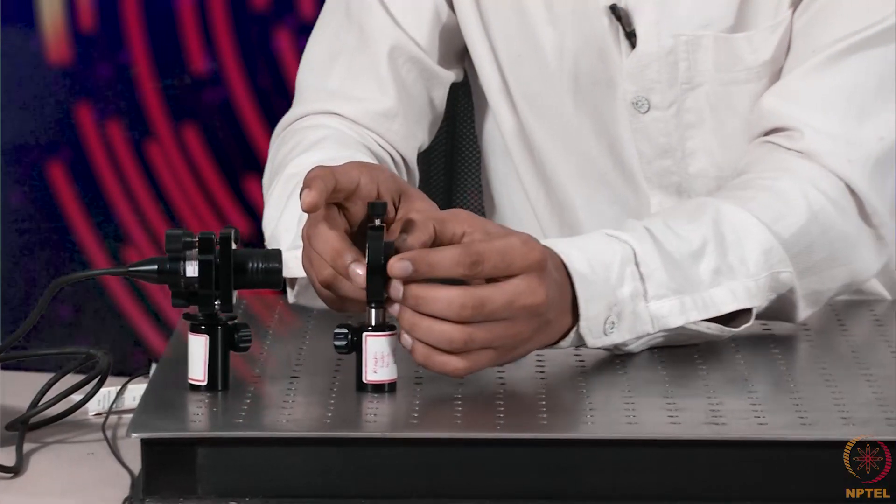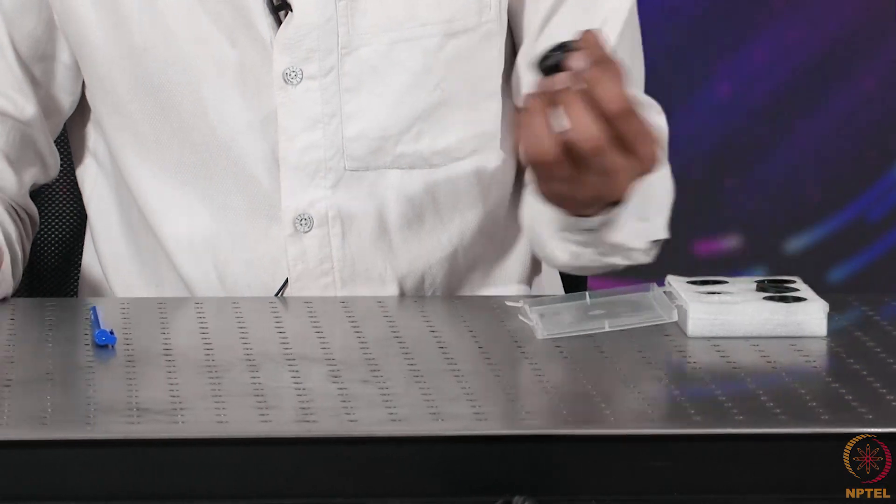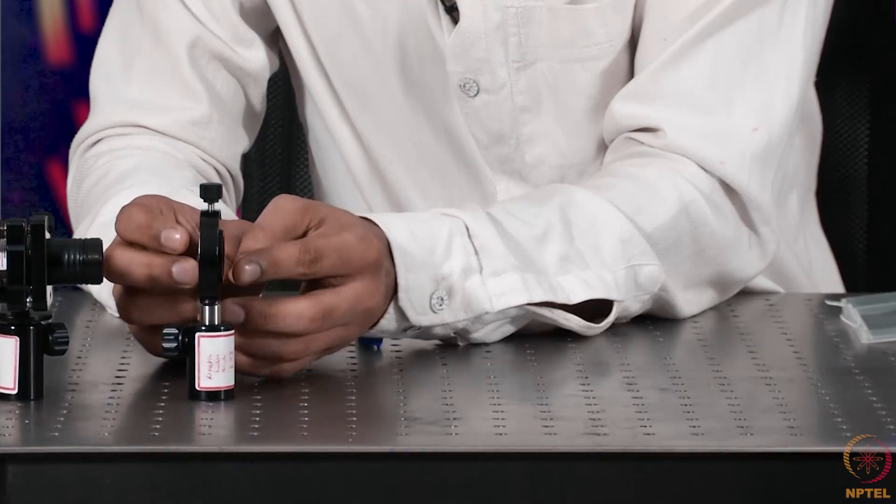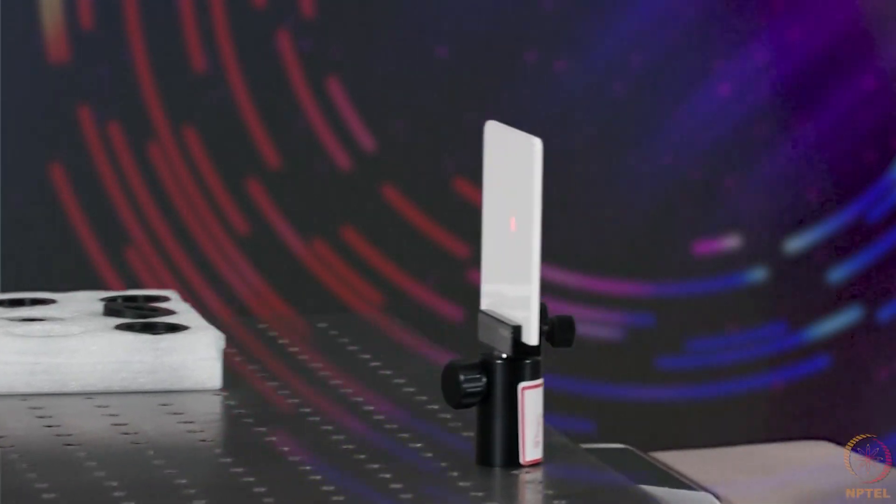If I remove double slit and now if I put a single slit over here, now you can see the difference. You can still see the patterns over here being formed from the single slit itself. This is interference pattern we are seeing for the single slit.